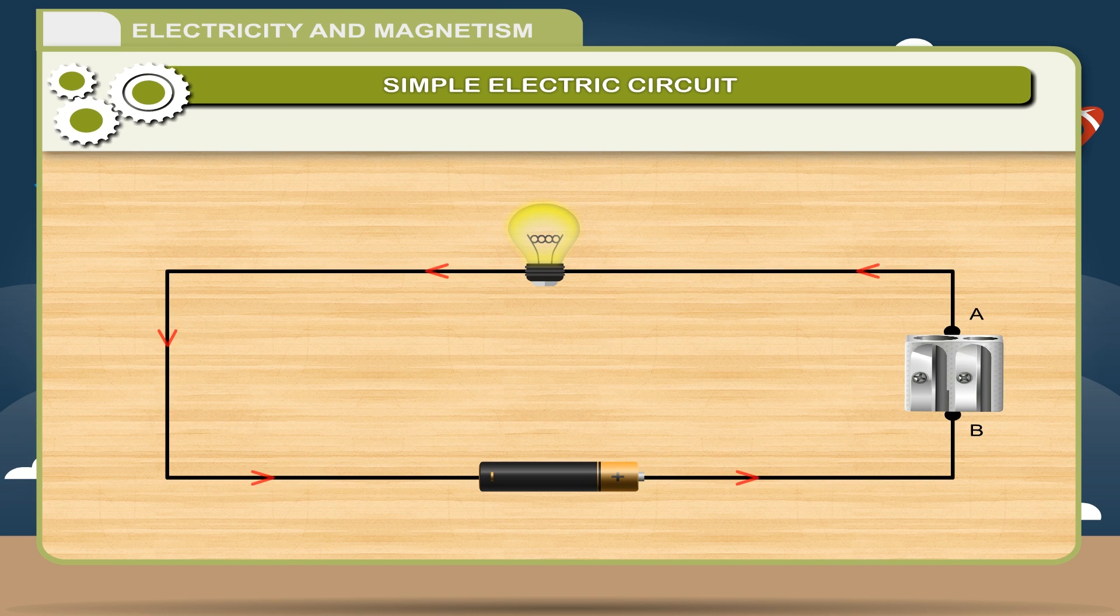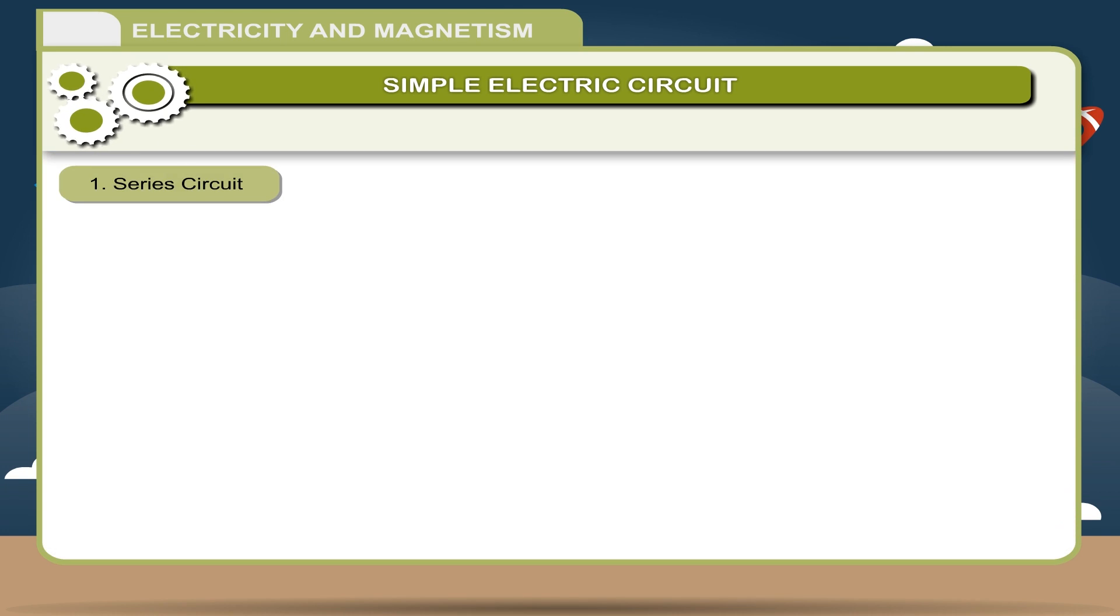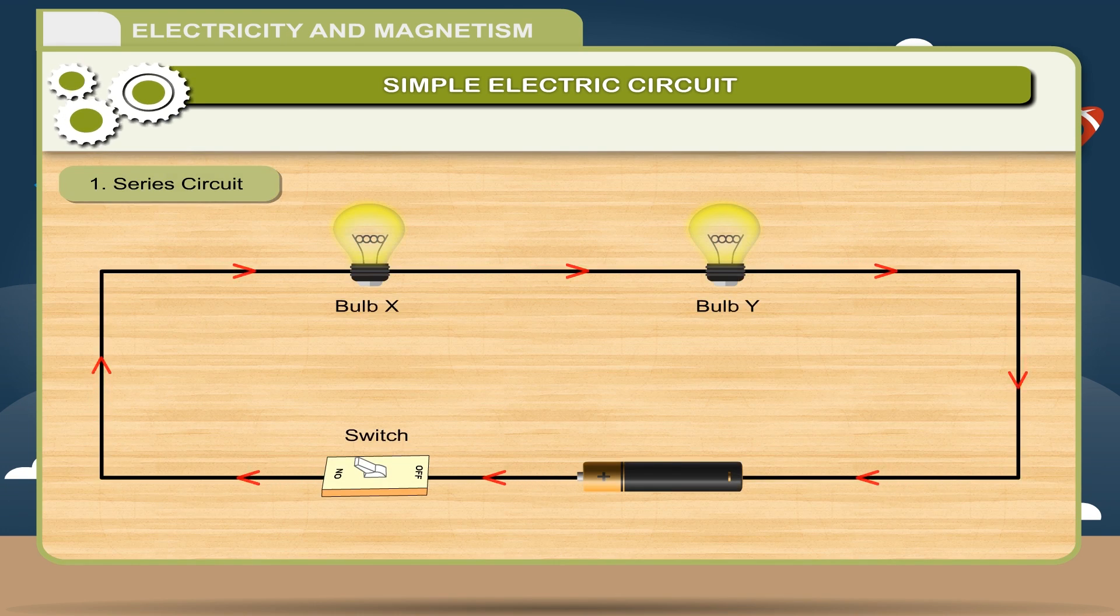You will find that the bulb glows now. The electric current starts flowing in the circuit. Thus for an electric current to flow there must be a complete circuit with no gaps. Circuit diagram: Electric circuit. 1. Series circuit. If all the devices are connected end to end so that the same current flows through each of them then the combination will be called series combination.